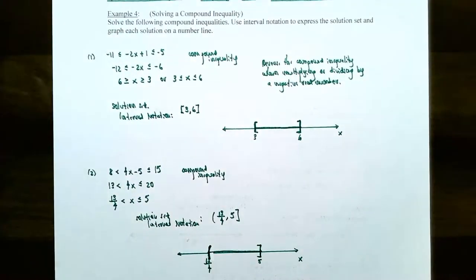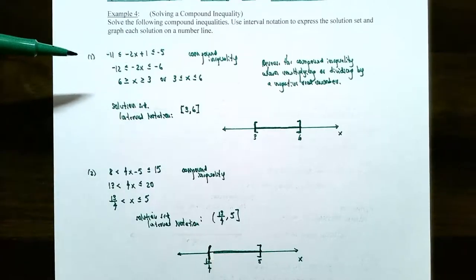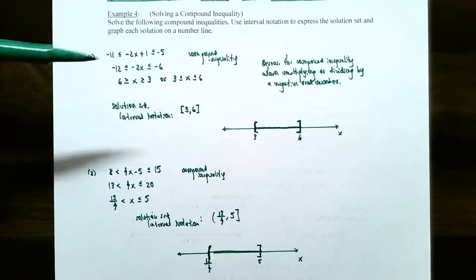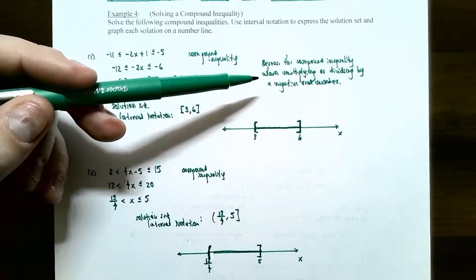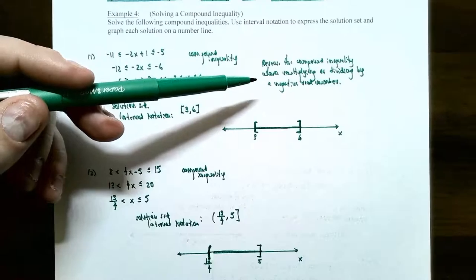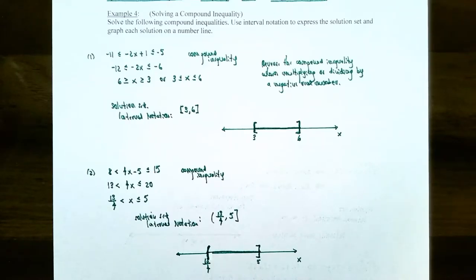That's how you solve compound inequalities: whatever operation you do to one part, you do to all three parts. If you ever divide or multiply by a negative number, reverse not just one but both inequality symbols. This finishes up solving linear inequalities and compound inequalities. If you have any questions about the examples or the homework for this section, please let me know. See you at the next video when we talk about quadratic functions.